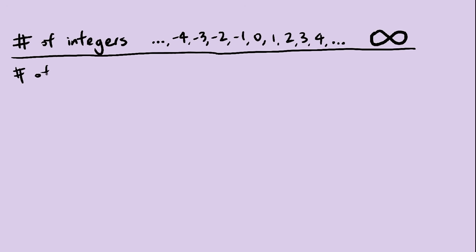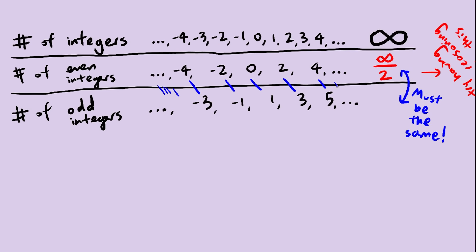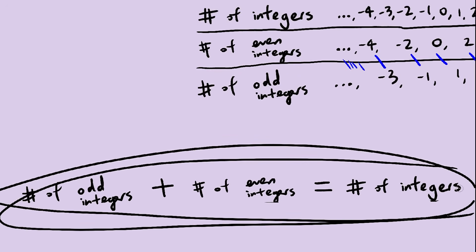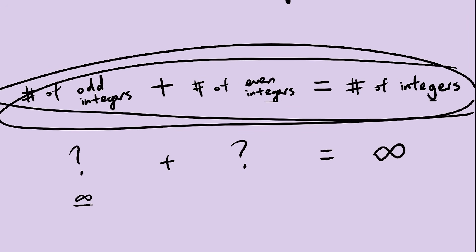Alright, first we need a starting point. Let's say the amount of integers is infinity. Now, can we find the amount of even numbers? You might just say infinity over 2, but let's at least try to make things somewhat rigorous. We can see that the amount of odd numbers is the same as the amount of even numbers, and that both amounts add up to infinity. Therefore, both amounts are infinity over 2.